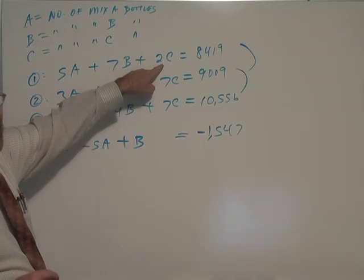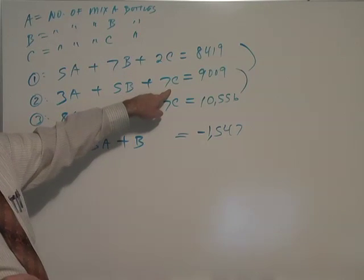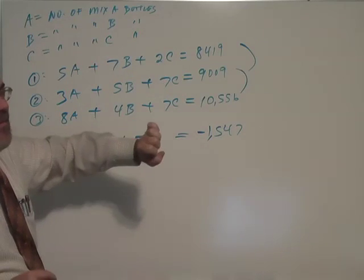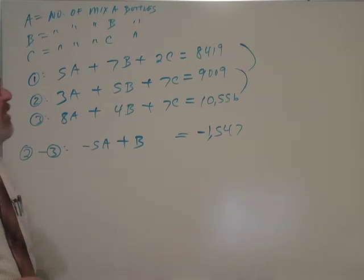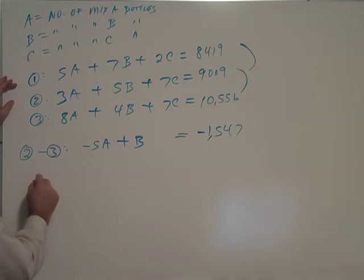So I'll get a positive 14C and a negative 14C which will cancel the C's by using these two equations. So what was that again? We did 7 times equation 1.